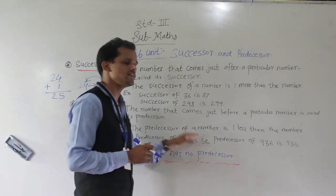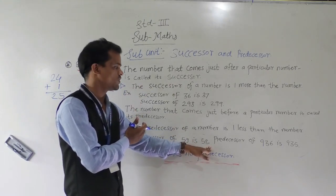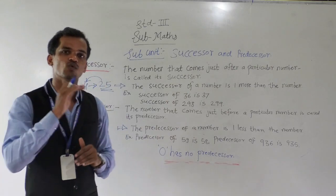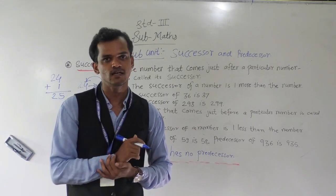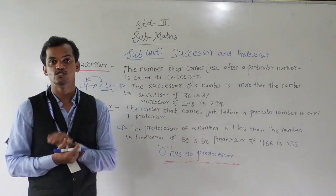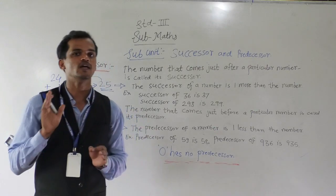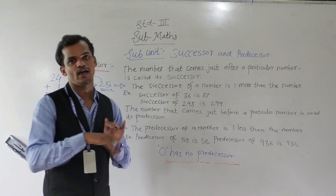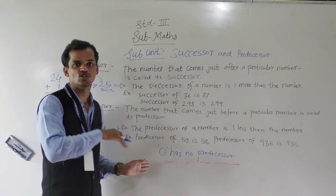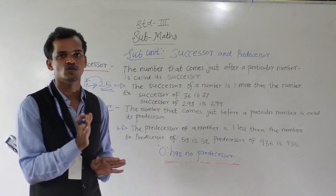The predecessor of 59 is 58 because in our number series, 58 comes just before 59. The predecessor of 936 is 935. Successor is 1 more than the given number; predecessor is 1 less than the given number. One important thing: 0 has no predecessor, because our number series starts from 0 and before 0 no number is there. But 0 does have a successor — 1, because after 0, 1 comes. So 1 is the successor of 0.